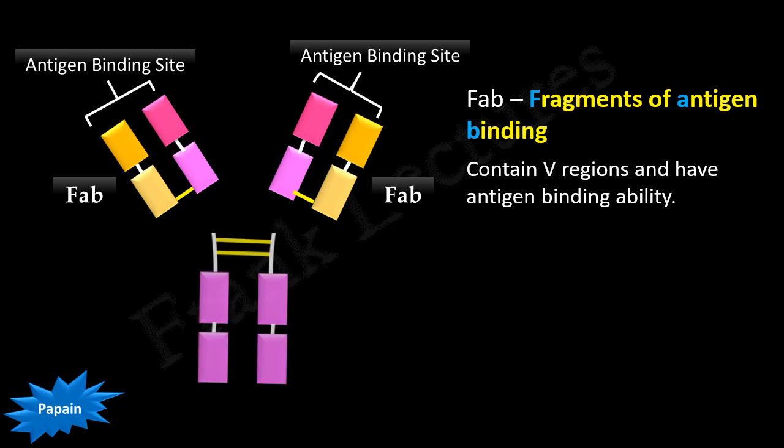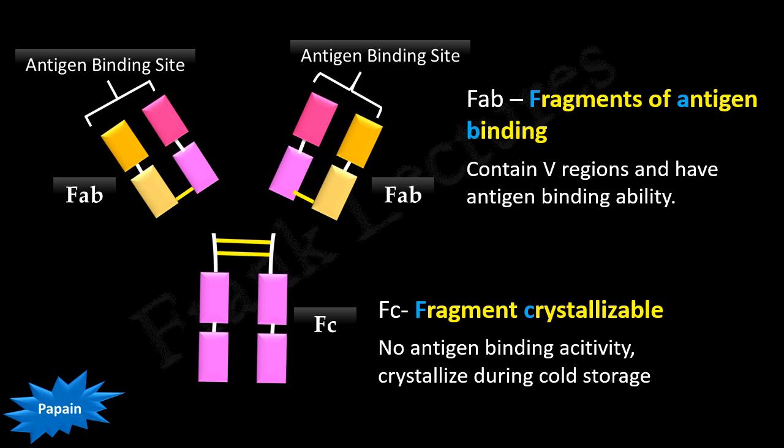The third fragment has no antigen binding activity at all. It consists of constant regions of heavy chains held together by disulfide bonds. It was found that this fragment crystallized during cold storage, so it was called fragment crystallizable, abbreviated as FC. We now know that the FC fragment plays a role in opsonization and complement fixation, which involves antibodies.